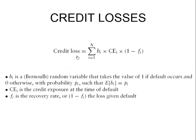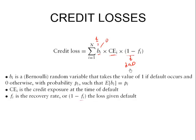The credit loss on a portfolio can be calculated as the sum of credit losses on individual securities. The variable B_i represents whether or not the security is in default — one means default, zero means no default. If there is no default, there is no loss regardless of exposure. If in default, the loss equals exposure at default multiplied by loss given default. Loss given default can also be written as 1 minus the recovery rate F, so LGD = 1 − F.